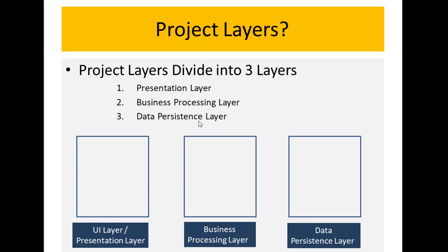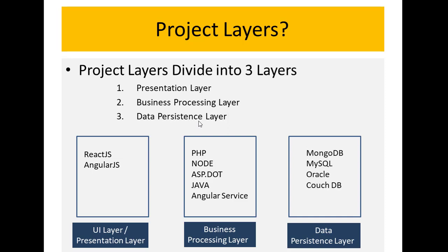What does each layer mean? User interface — you can understand that. The presentation layer is the UI layer. ReactJS uses the UI layer, which means it will only work on the front-end. For the business processing layer, that depends on other technologies like PHP, Node, ASP.NET, Java, and Angular services. And data persistence means whatever the databases are — we add them to the data persistence layer. These three layers together create a complete application.